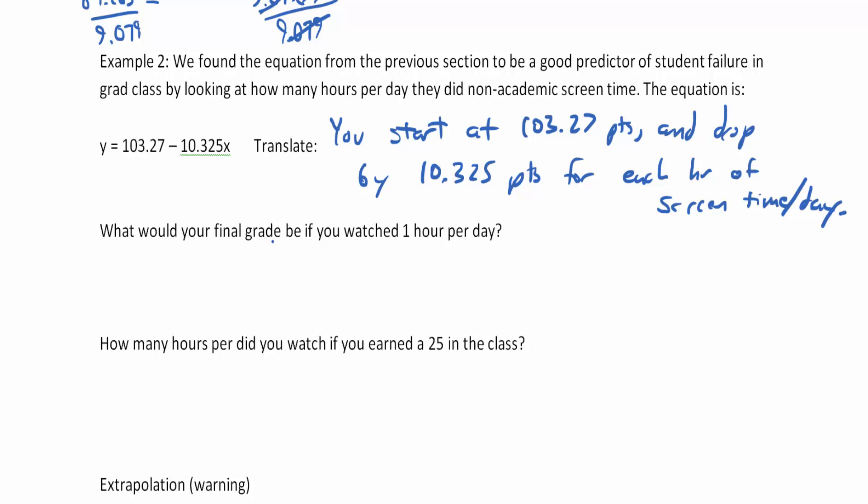What would your final grade be if you watched one hour per day? The one hour is our x value, and final grade is our y value. So y hat equals 103.27 minus 10.325 times 1. Type that into the calculator, and anything times 1 is itself. So y equals 103.27 minus 10.325, which gives 92.945 points.